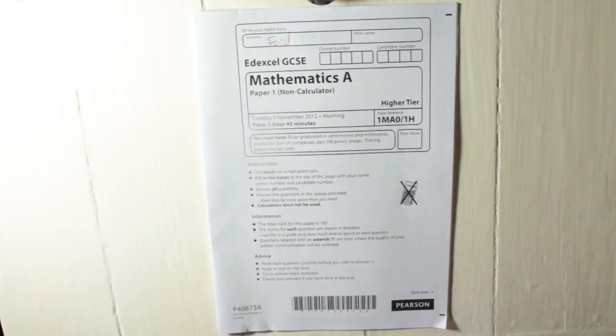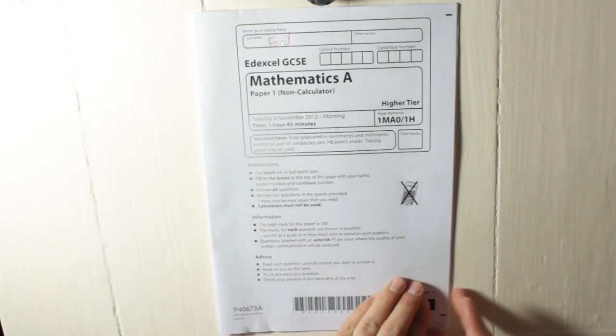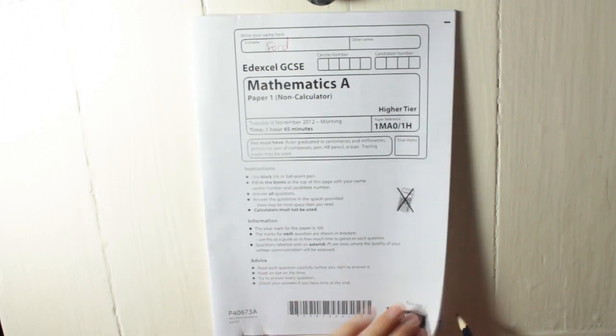Right, this test is the Edexcel GCSE Mathematics A, Paper 1, non-calculator, higher tier, and it was originally done on Tuesday, the 6th of November 2012, in the morning, and they had an hour and 45 minutes.